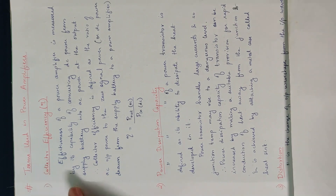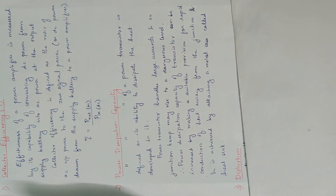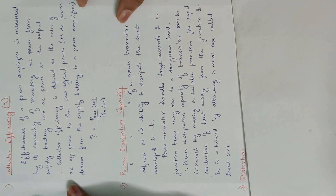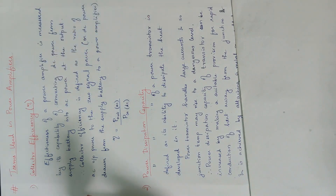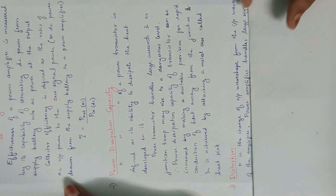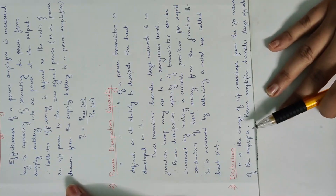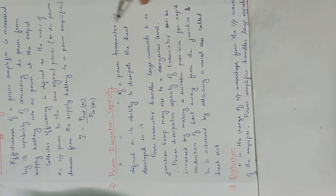The third term is distortion. Distortion is not desirable in a waveform. Distortion is defined as the change of output wave shape from the input wave shape of the amplifier. If the input and output wave shapes differ, the signal is said to be distorted.